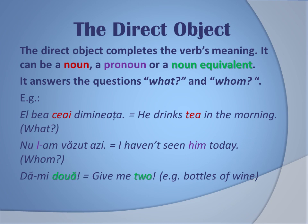Next, the very basics of the direct object. The direct object completes the verb's meaning. It can be a noun, a pronoun, or a noun equivalent, and it usually answers the questions 'what' and 'whom'. For example: 'el bea ceai dimineața' — he drinks tea in the morning. What does he drink? Tea.